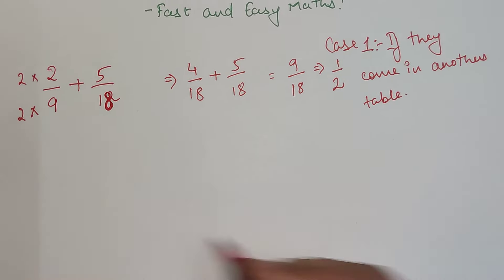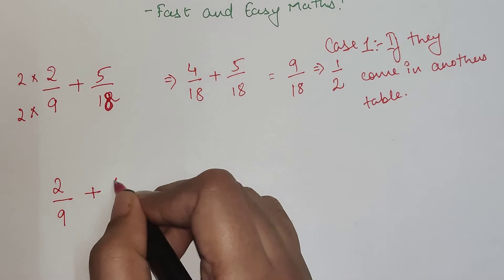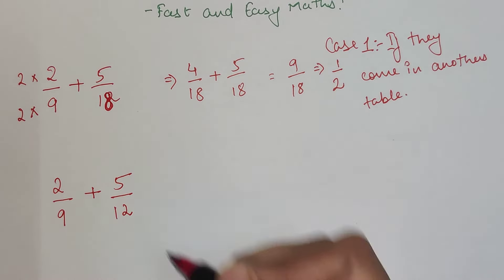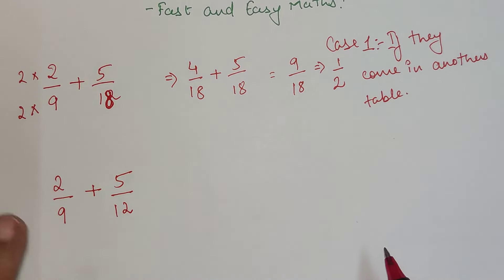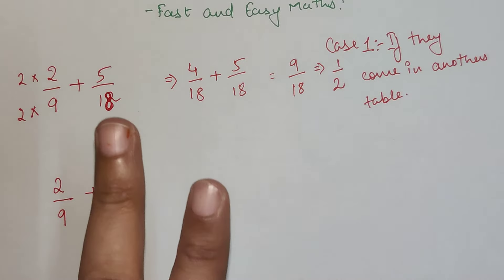Like I said, if my actual question was 2 upon 9 plus 5 upon 12, the problem is that none of them are coming in each other's table. So there are two ways to do this.